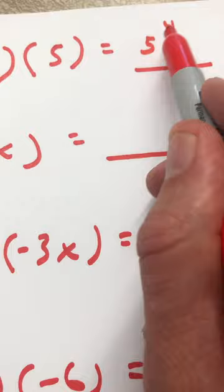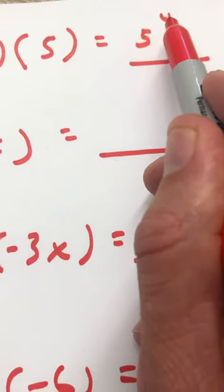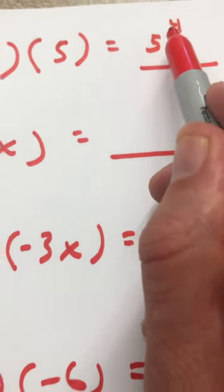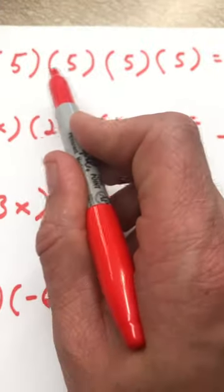This 5 is known as the base, and the 4 is known as the exponent. That's what exponential notation is all about—it's a shorthand way of writing a string of multiplying.